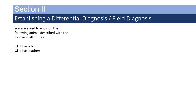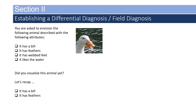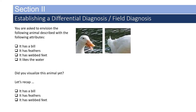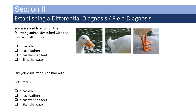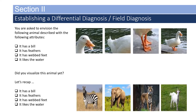You were asked to envision the following animal describing these attributes: it has a bill, it has feathers, it has webbed feet, and it likes the water. Did you visualize this animal? If you guessed the zebra, the elephant, the tiger, or the goat, I'm sorry to say that you are incorrect.